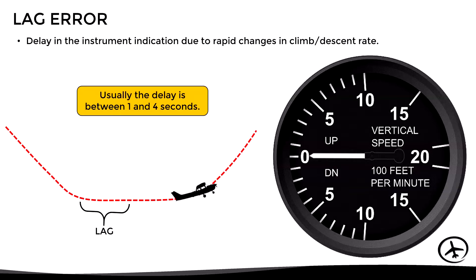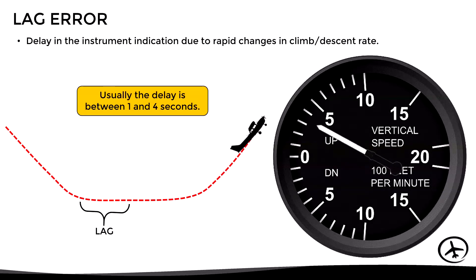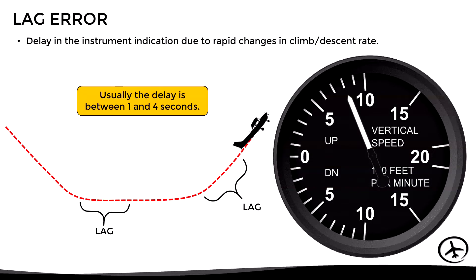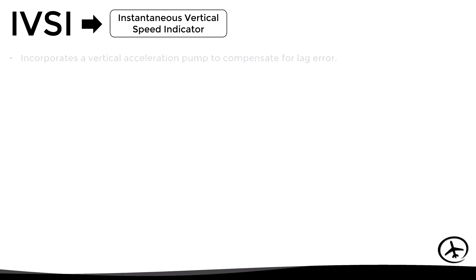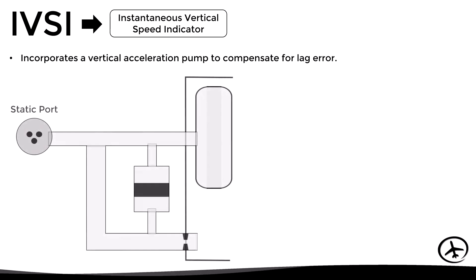Again, it will take a few seconds for the VSI to indicate the corresponding rate of climb. This type of error can be counteracted using an IVSI — this stands for Instantaneous Vertical Speed Indicator. Basically, it is a regular VSI that incorporates a vertical acceleration pump to compensate for lag error.